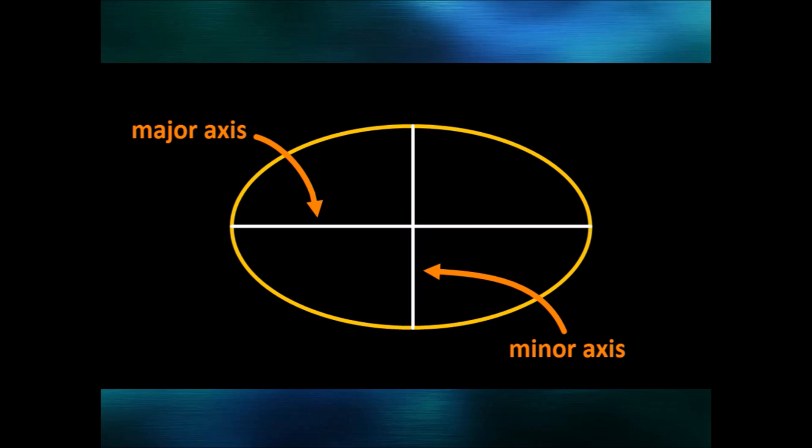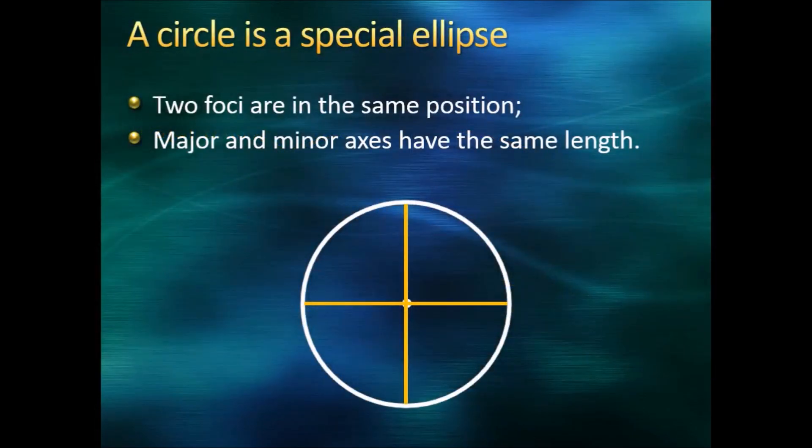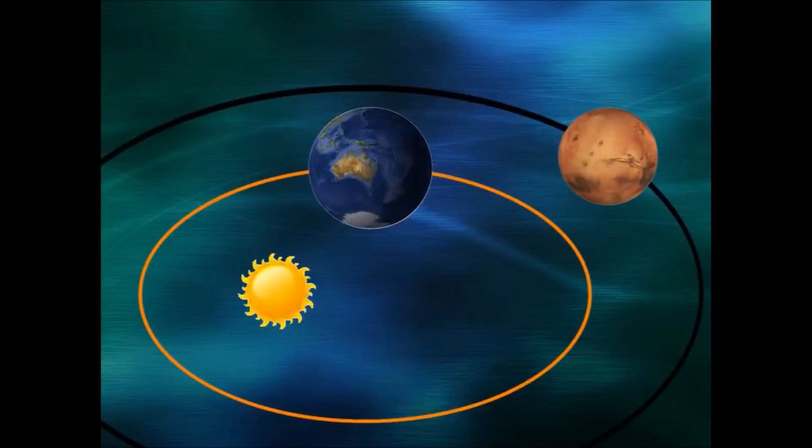The shorter line is the minor axis, the shortest line you can draw between two points on the ellipse that goes through the centre. From this point of view, a circle is really a special type of ellipse. In a circle the two foci are in the same position, and the major and minor axes have the same length. Orbits of the planets are quite close to circular, but they are true ellipses with two foci. The sun always sits at one of these focal points.